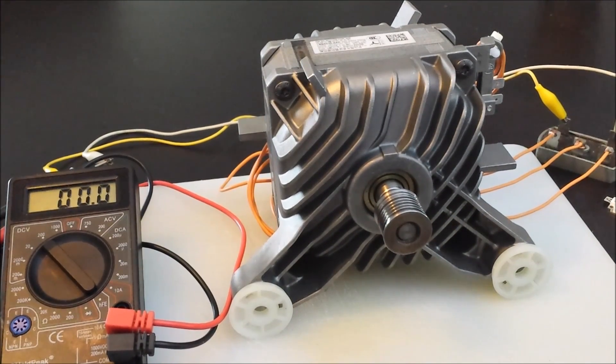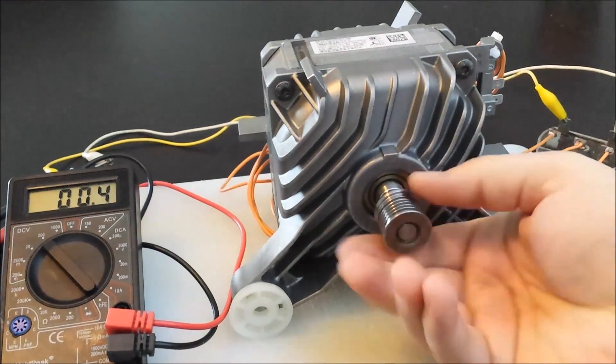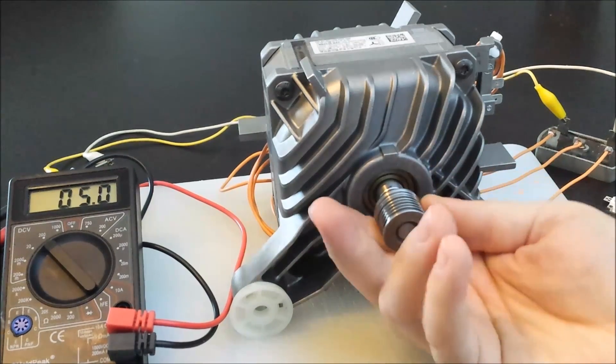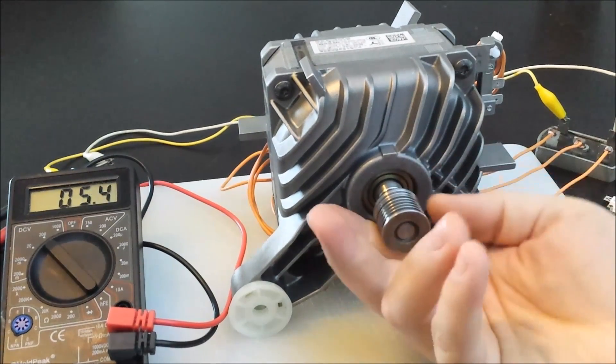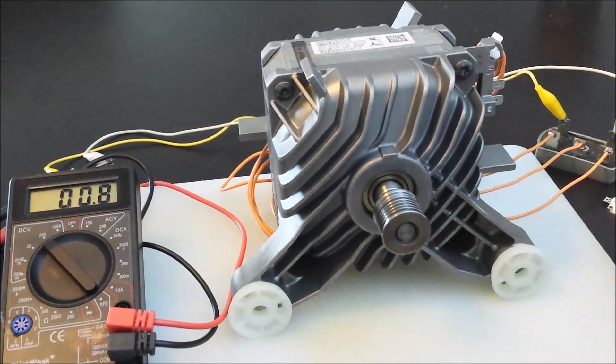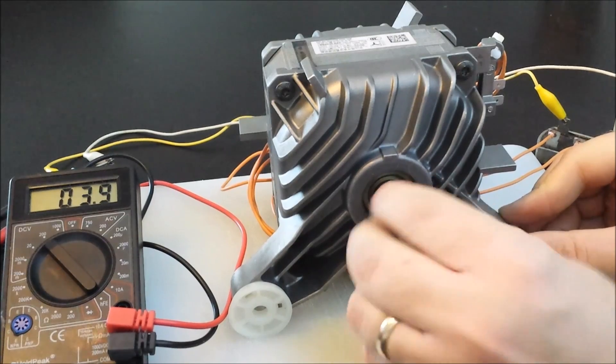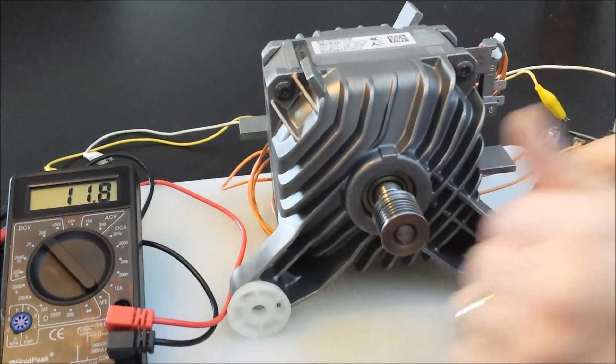Well now off to testing the motor. I've bridge rectified the output of the motor and hooked it up to my voltage meter. And you can see just by simply turning it by hand I can produce voltage around 14 to 18 volts. That's a fairly decent amount.